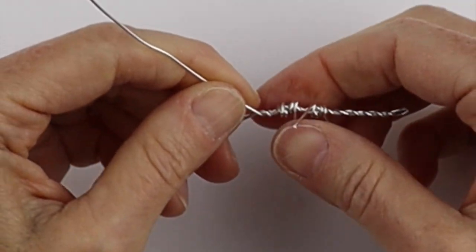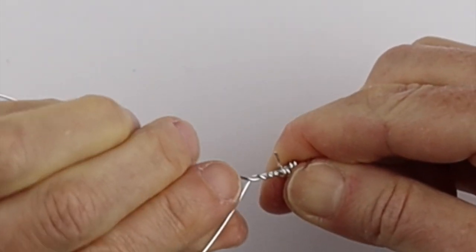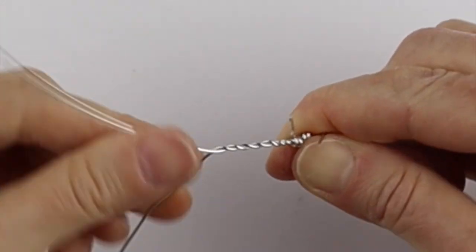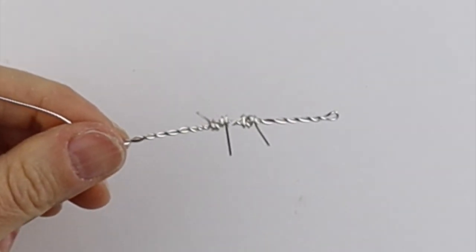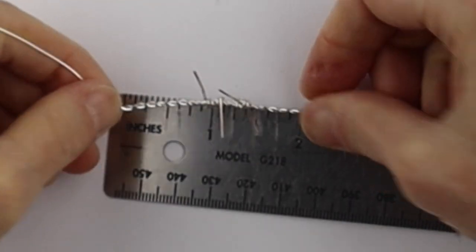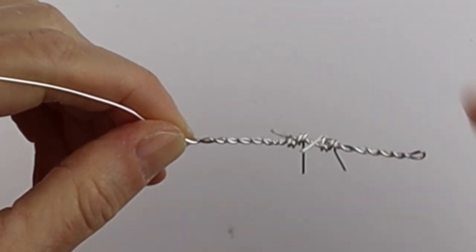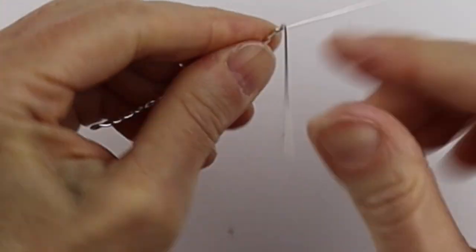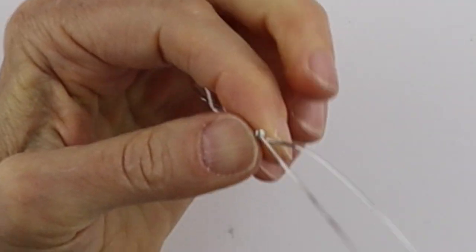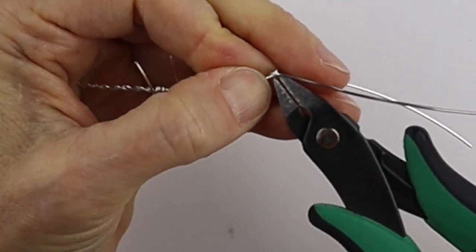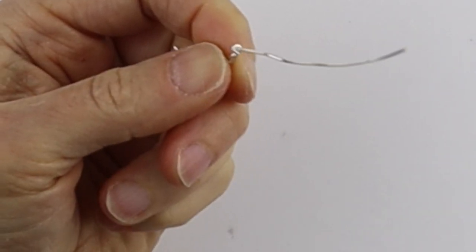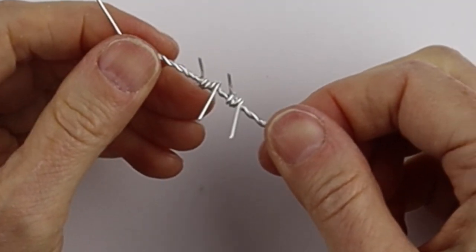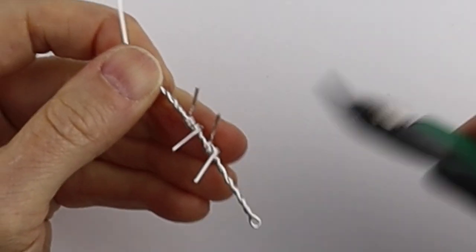Around and around again. Probably two is enough because you don't want this part to be too wide. Then we're just going to keep doing our twist until we get to about two and a quarter inches. We're going to measure that. What I want to do now is take one of these, bend it around, and clip it off so it's flush. Push that end in so it's not scratchy.